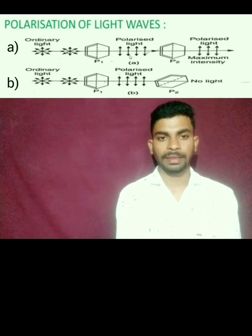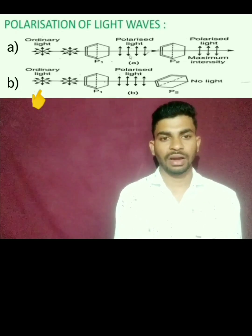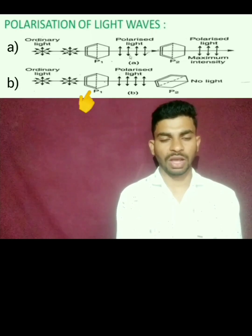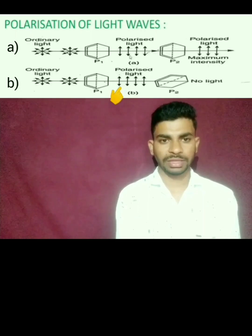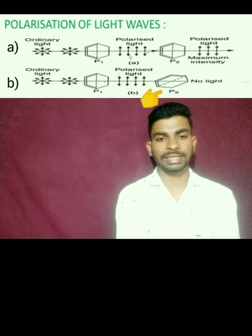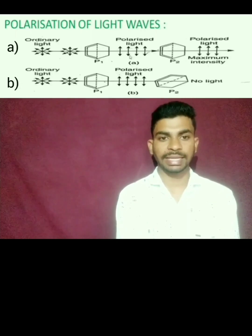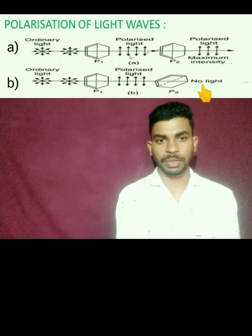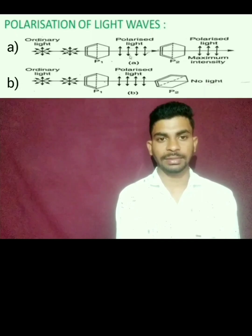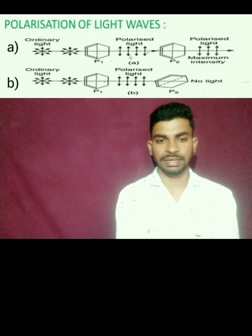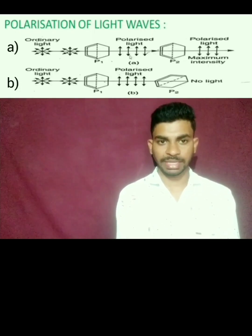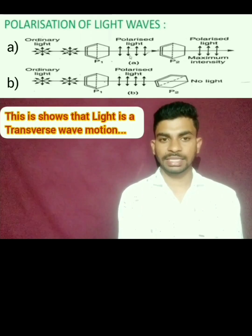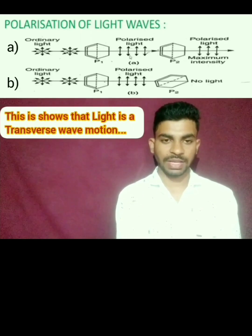In the case of figure B, here also we are taking ordinary light. Ordinary light passes through the P1 crystal, and after crossing the P1 crystal, it is also moving in one side direction — this is also polarized light. But in this case, we are rotating the P2 crystal by 90 degrees, meaning crystals P1 and P2 are perpendicular to each other. There is no light passing through P2 crystal, so we can see minimum intensity here. This shows that light is a transverse wave motion.